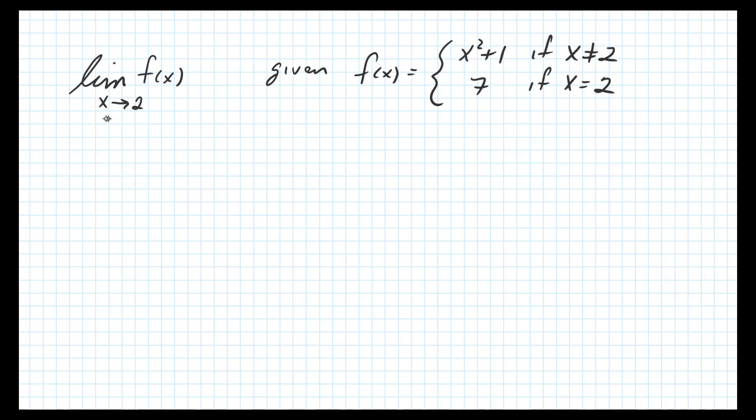Here we're asked to find the limit as x approaches 2 of f(x), given that the function is defined as a piecewise function: f(x) equals x squared plus 1 if x is not equal to 2, or it equals 7 if x is equal to 2.